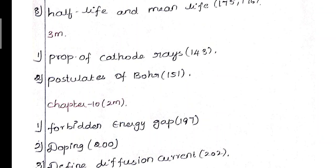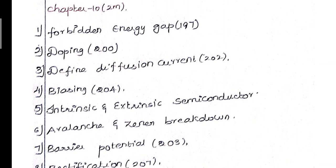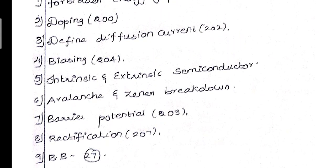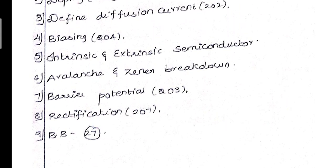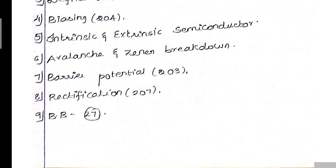Chapter 10 2-mark questions: 1st question - forbidden energy gap, page 197. 2nd question - doping, page 200. 3rd question - define diffusion current, page 202. 4th question - define biasing, page 204. 5th question - intrinsic and extrinsic semiconductor. 6th question - avalanche and Zener breakdown. 7th question - barrier potential, page 203. 8th question - what is rectification, page 207. 9th question - from the book, 27th question.